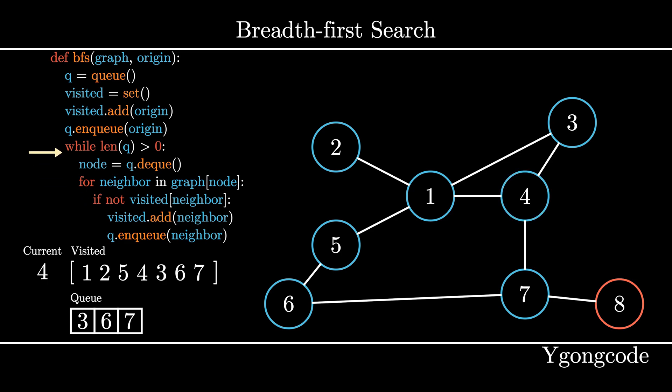Then we move on to the node 3, which has no non-visited neighbors. The same case applies for node 6 as well.